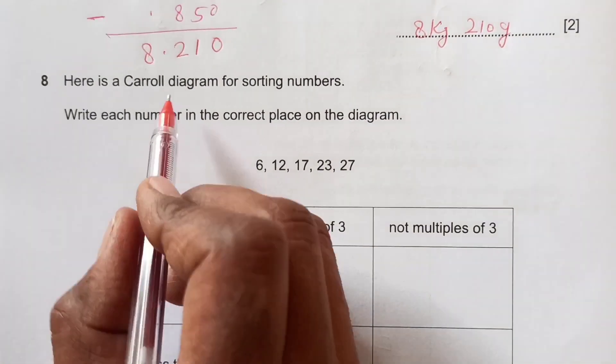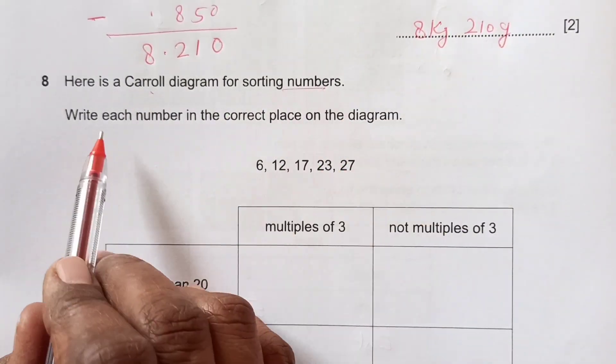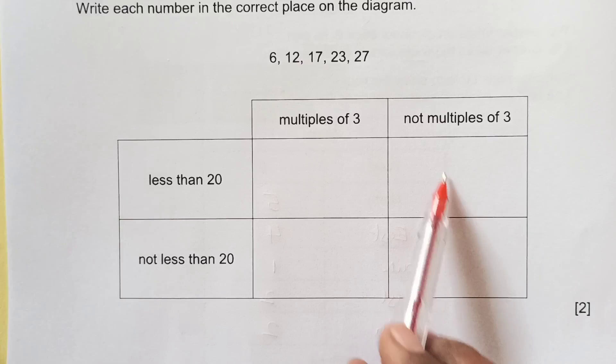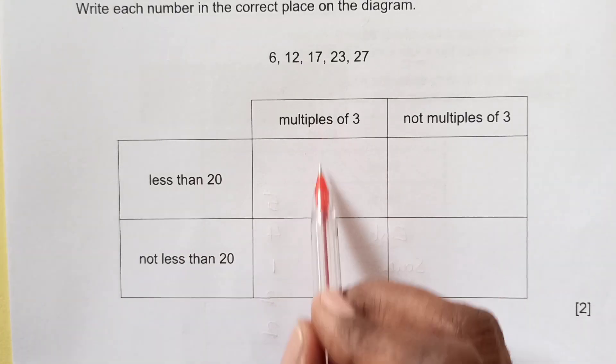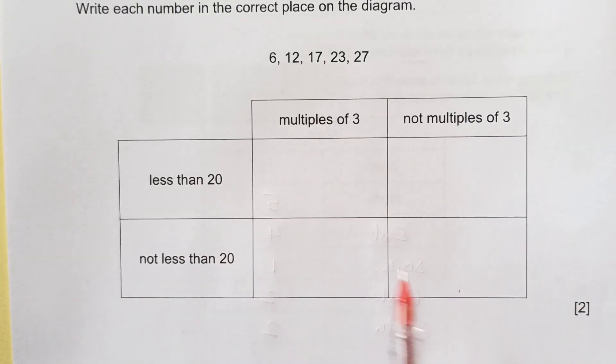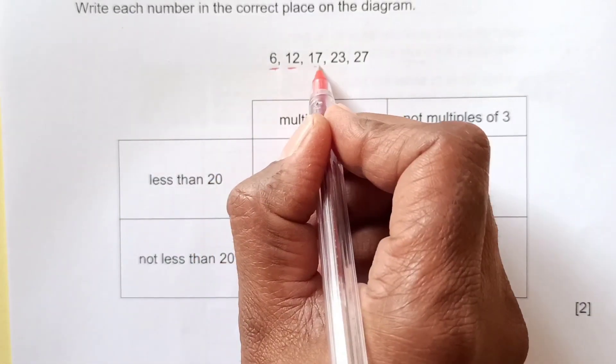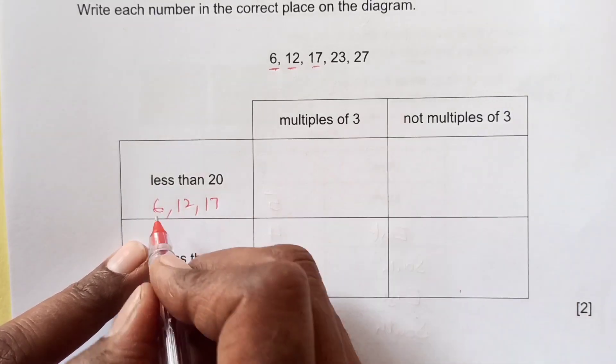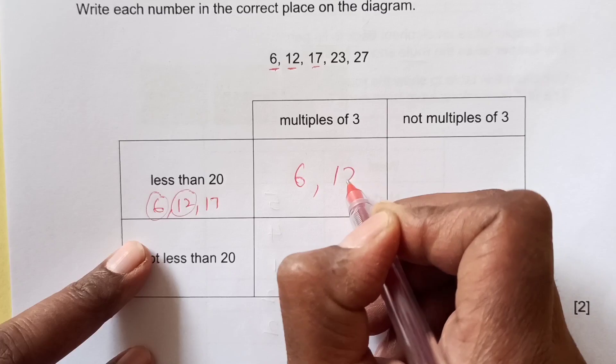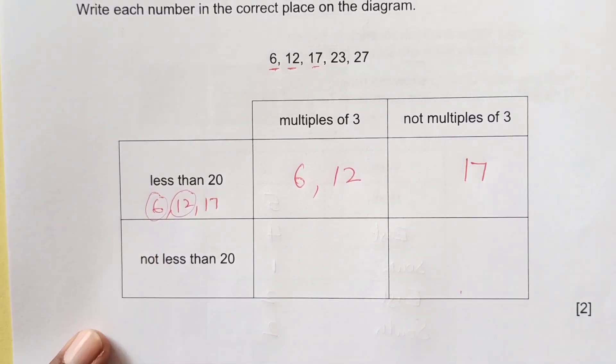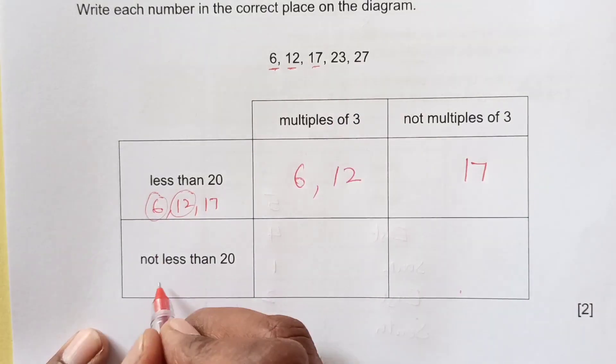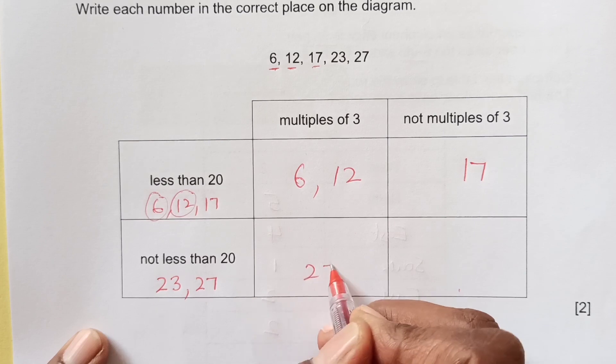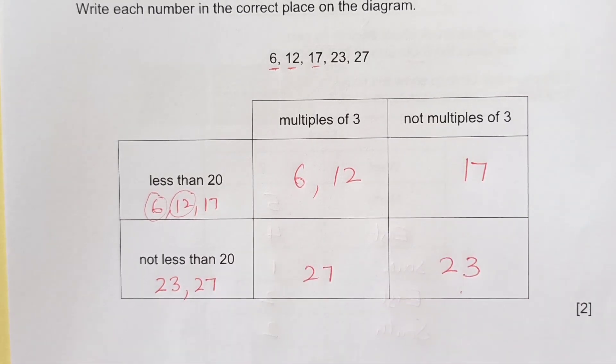Number 8. Here is a Carroll diagram for sorting numbers. Write each number in the correct place on the diagram. We have here multiples of 3, not multiples of 3, less than 20. Less than 20, we have 6, 12 and 17. Out of these, which are multiples of 3: 6 and 12 is multiple of 3. Not multiple of 3: 17. Then not less than 20, that means greater than 20: 23 and 27. Multiple of 3 is 27 and not multiple of 3 is 23.